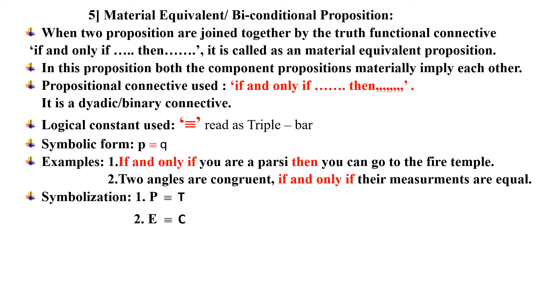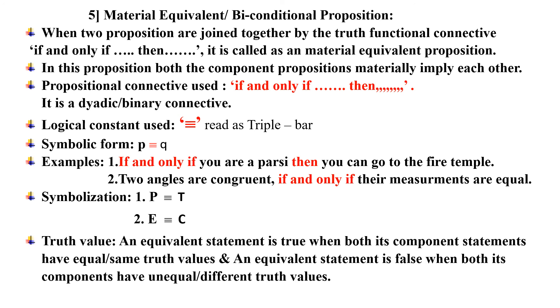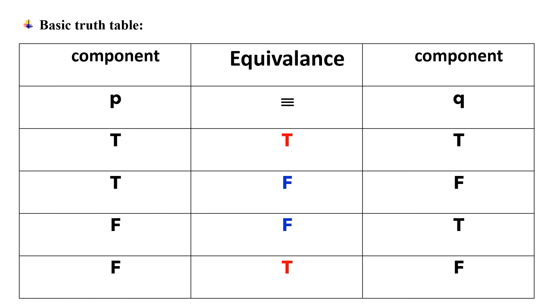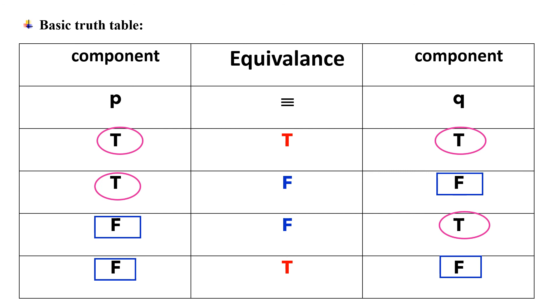Truth value: an equivalent statement is true when both its components have equal truth values — that is, both are true, then it is true; both are false, then also it is true. It is false when both components have unequal truth values — that is, the first is true and the second is false, or the first is false and the second is true, then it will be false. In the basic truth table, an equivalence is true when both sides have equal truth values, and false when they are unequal. You have to remember the basic truth tables — they are very important for the next chapter.